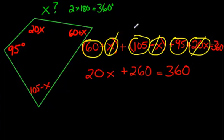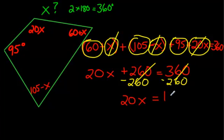Alright, the next step, what we would want to do is get rid of the 260, bring it over here. So, the way to do that, remember, is subtract by 260 over here, subtract by 260 over here, and what do we end up with? Well, we get 20x equals 100.